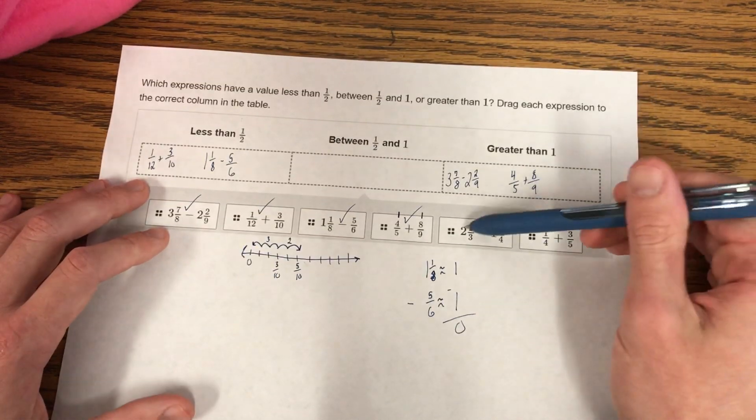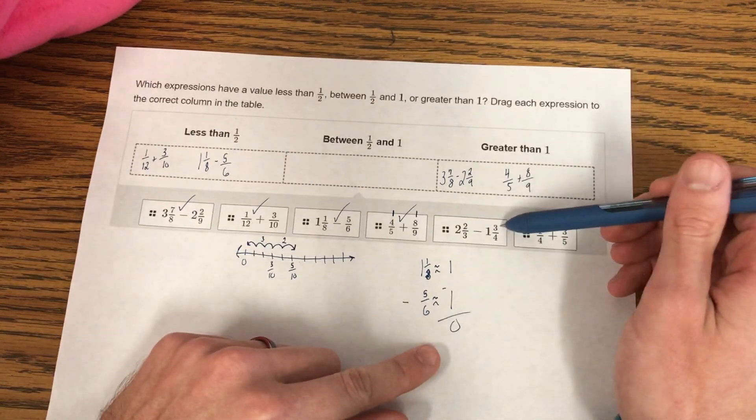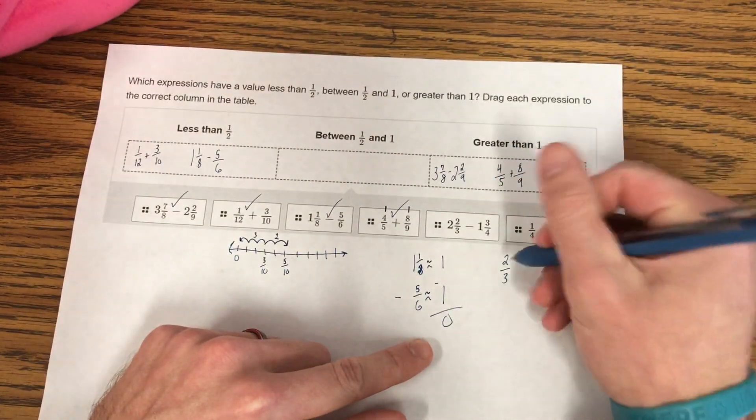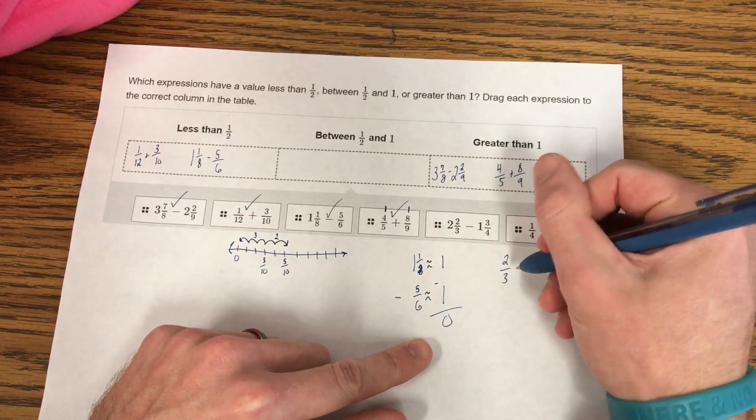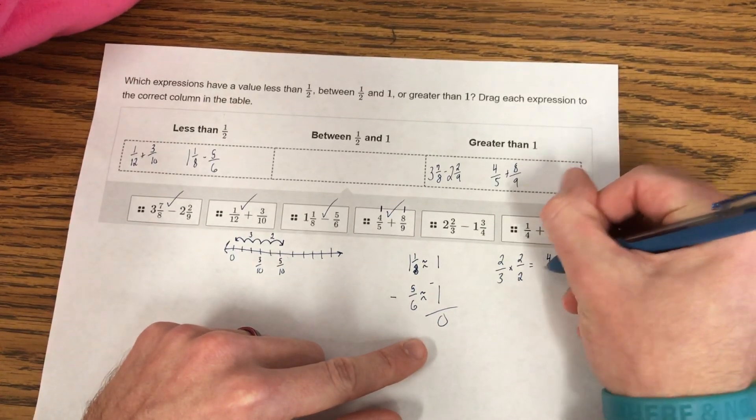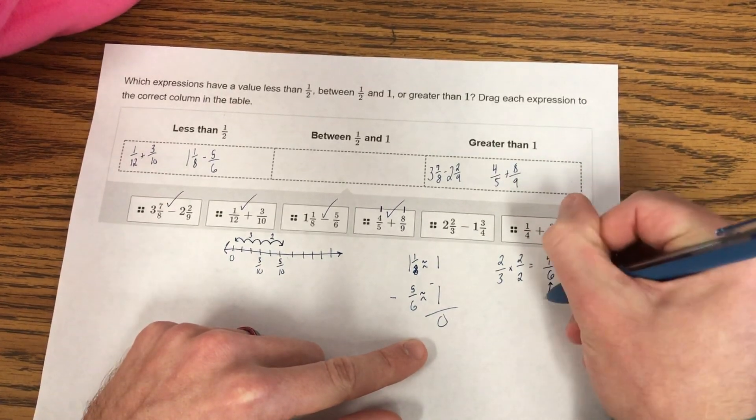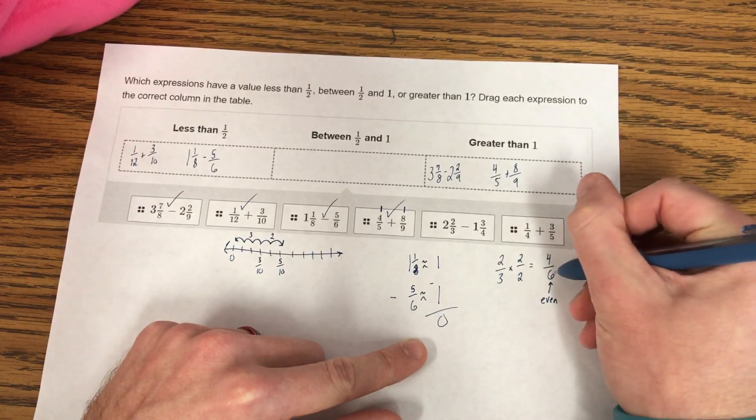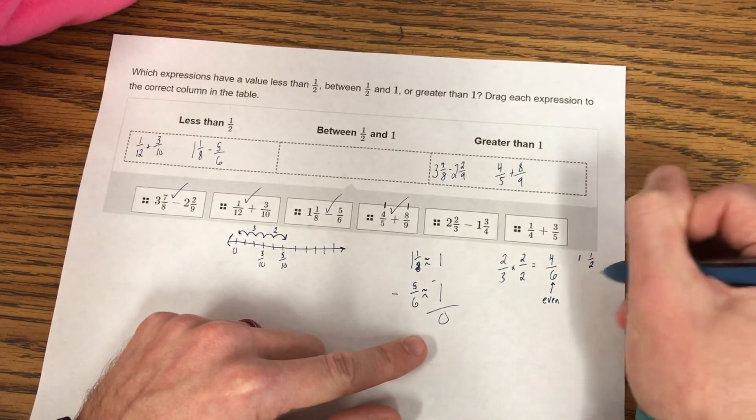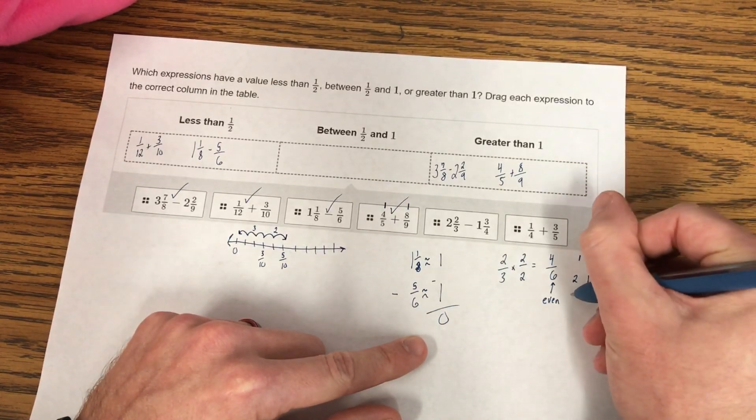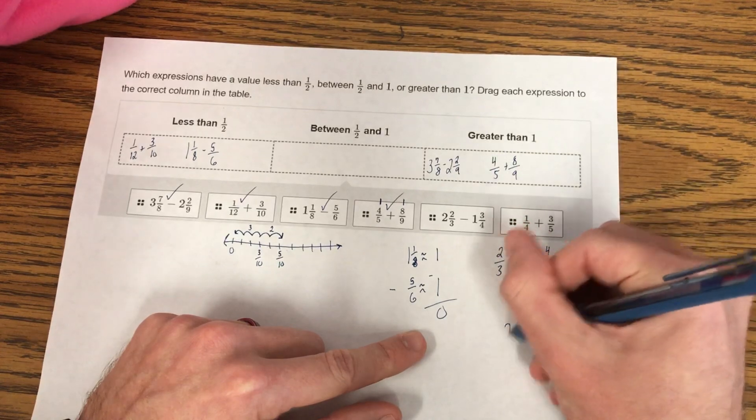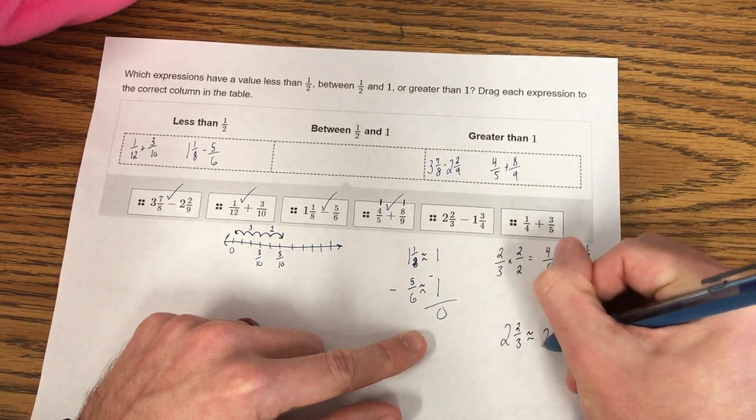So let's take a look at these last two: 2 and 2/3 minus 1 and 3/4. 2/3 and 3/4 are those tricky fractions that can really go either way. If we think of 2/3, well, it seems like it's close to 3/3, but it also seems close to 1/2. We can multiply it by a fraction, an equivalent fraction to 1, and get it to have an even denominator. And so I know that half of 6 is 3. Well, 4/6 is only one jump away from 1/2.